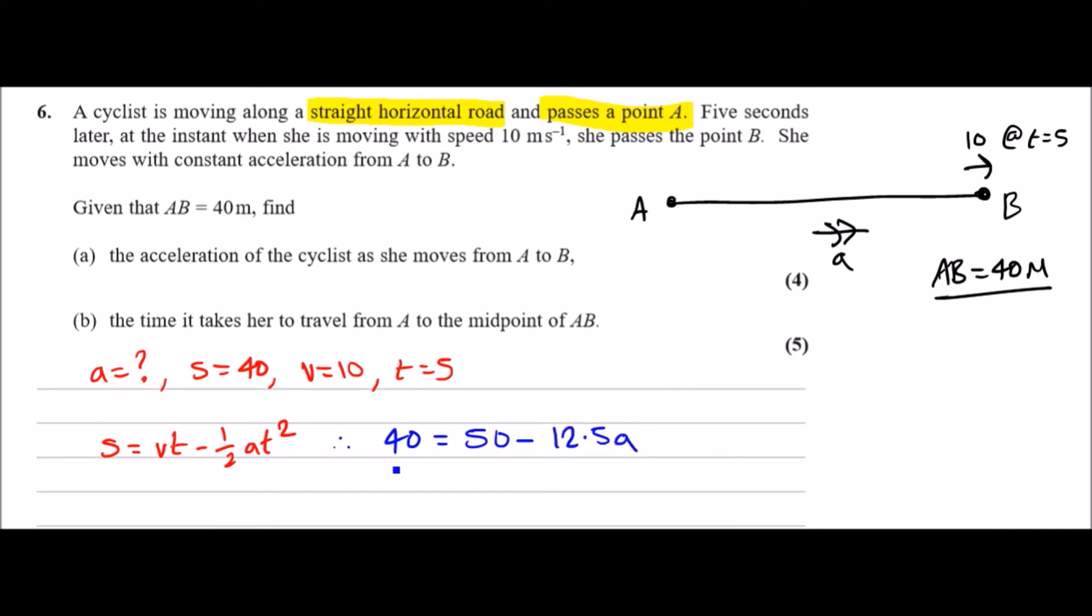Now just rearrange to make a the subject. Plus 12.5 across, subtract 40. You should have something like 10 over 12.5 if you rearrange it correctly, and this should give you 0.8 meters per second squared. That should be the correct answer.